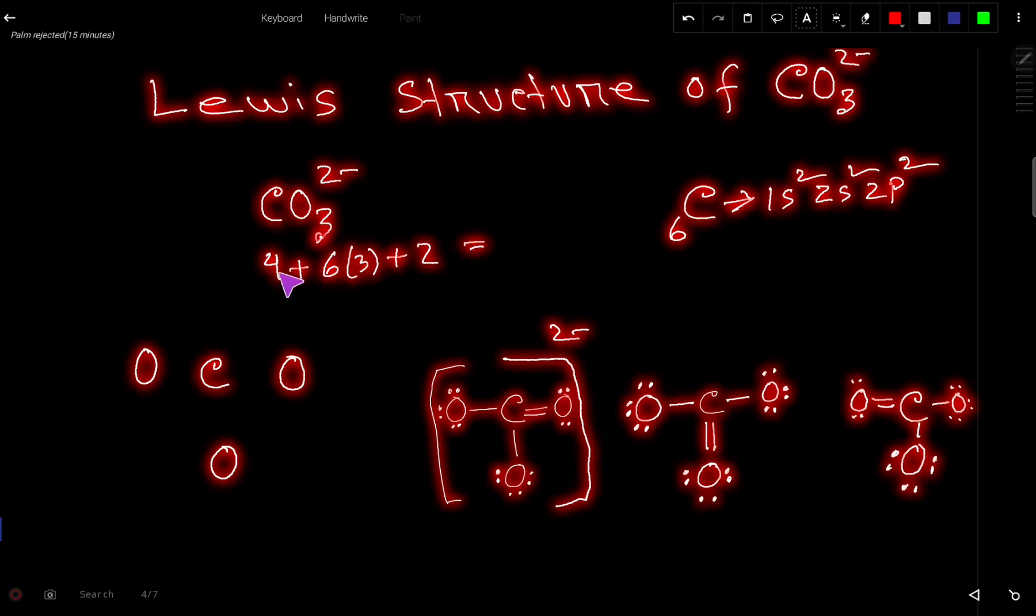So basically we are getting here 4 plus 6 times 3, 18, plus 2, 20 plus 4, 24 valence electrons totally.